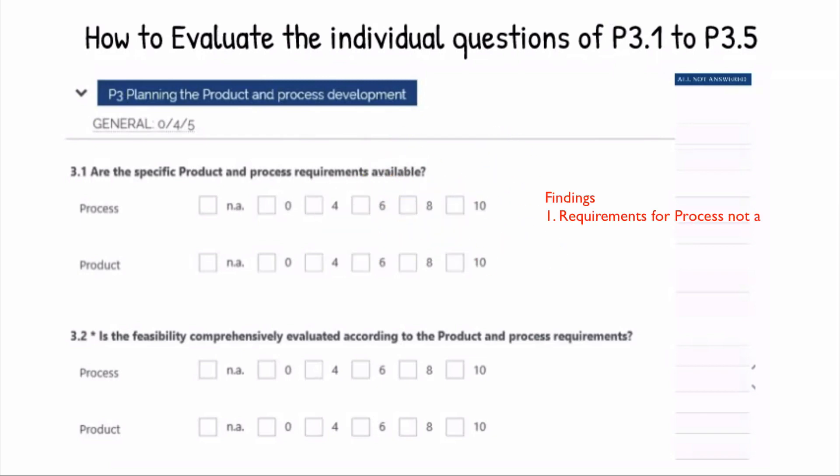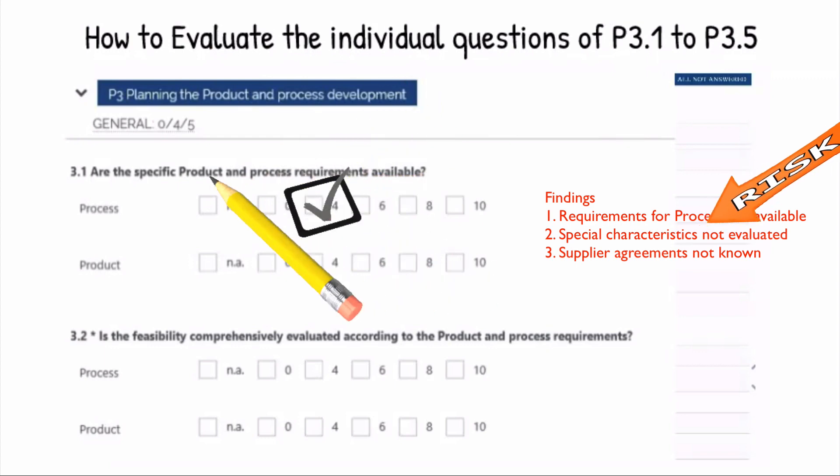If you have more than one finding for assessing a single question, the individual assessment which has the highest risk is to be used to score the respective question.